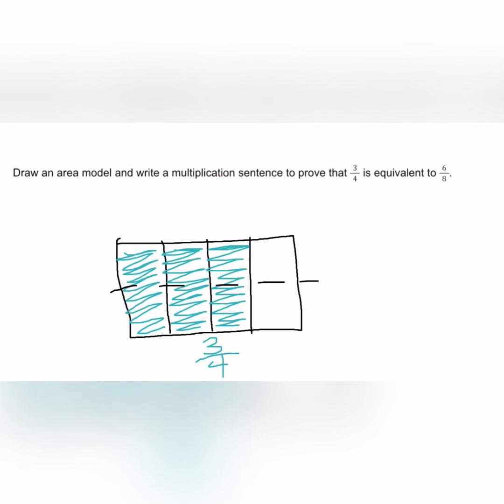Now let's count how many shaded pieces we have. One, two, three, four, five, six.